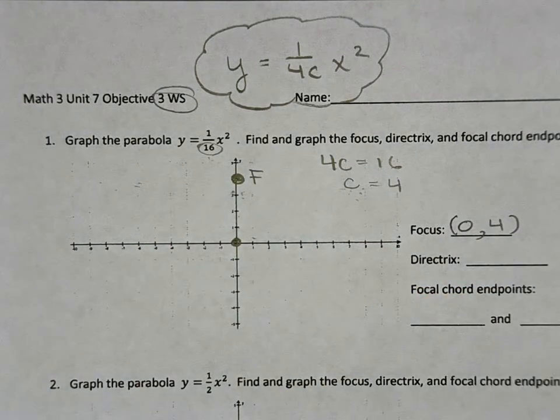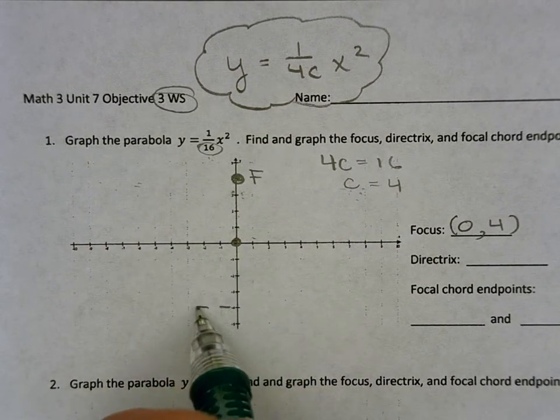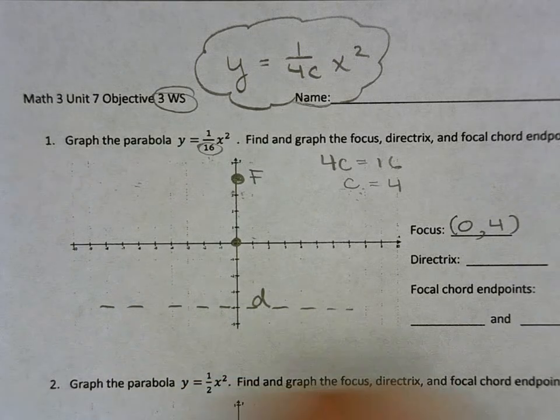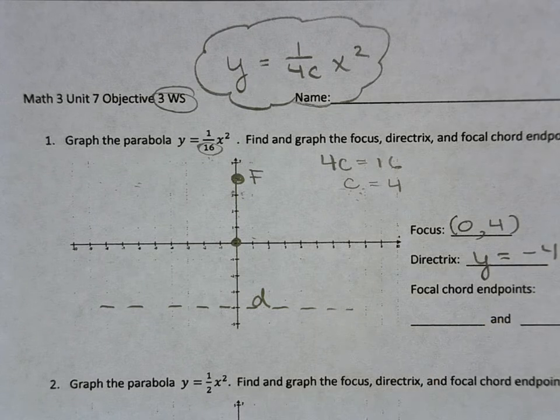And then my directrix is symmetric, so I need to go down 4: 1, 2, 3, 4. And there's my directrix. It's a line. So that equation is y equals negative 4.